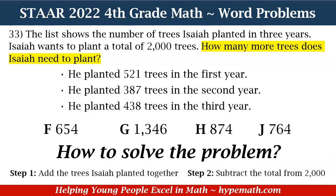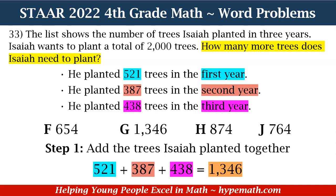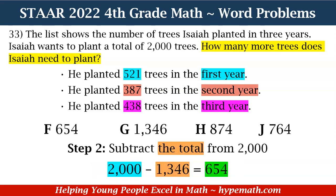How are we going to solve this problem? We'll take two steps. Our first step will be adding the trees Isaiah planted together, and then the second step will be subtracting the total from 2,000. Let's start with step one. We need to add the trees Isaiah planted together, so 521 plus 387 plus 438 is equal to 1,346. Now that we have that total, we can dive into step two, which is subtracting our total of 1,346 from 2,000. That means 2,000 minus 1,346, and that is equal to 654.